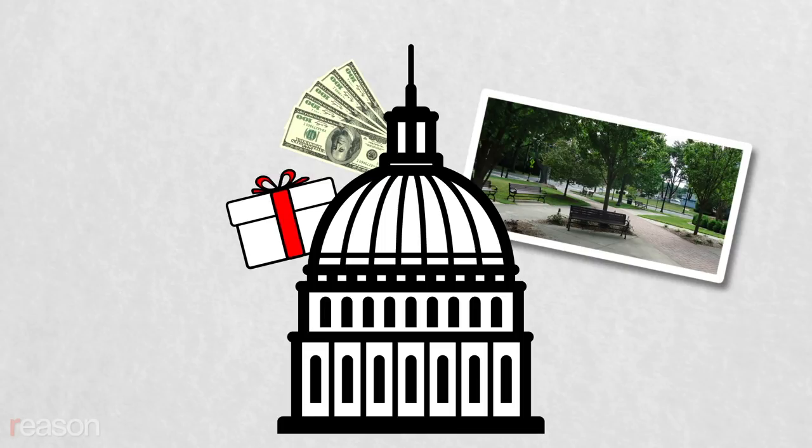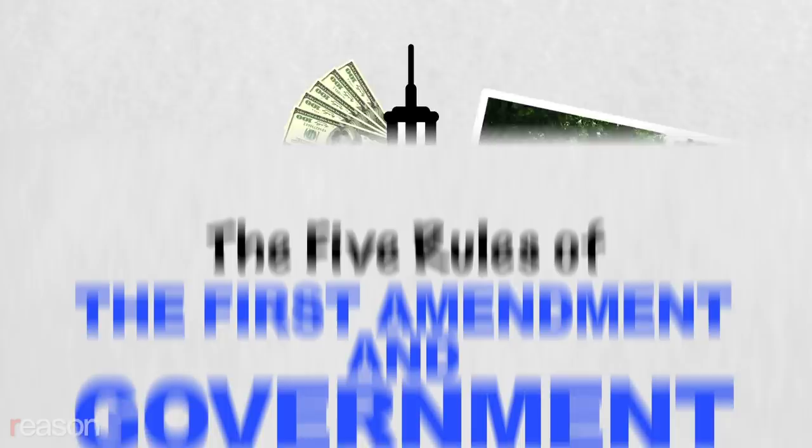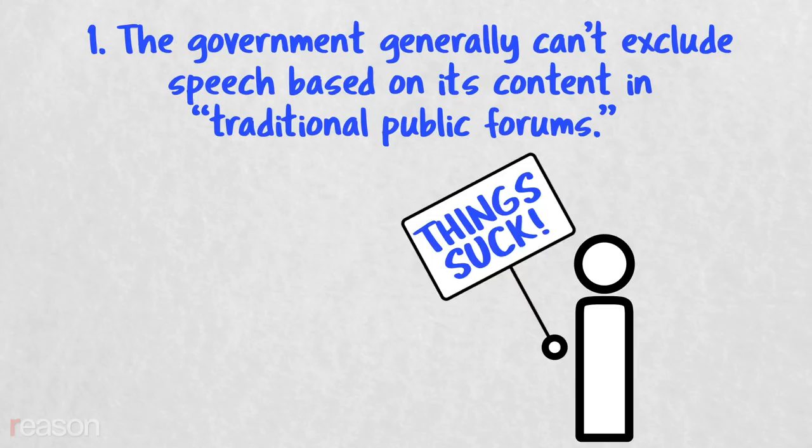Say the government is handing out money, or access to government property, or some other benefit. Can it exclude certain kinds of speech or certain kinds of speakers? It's complicated, but here are the five rules of the First Amendment and government property.